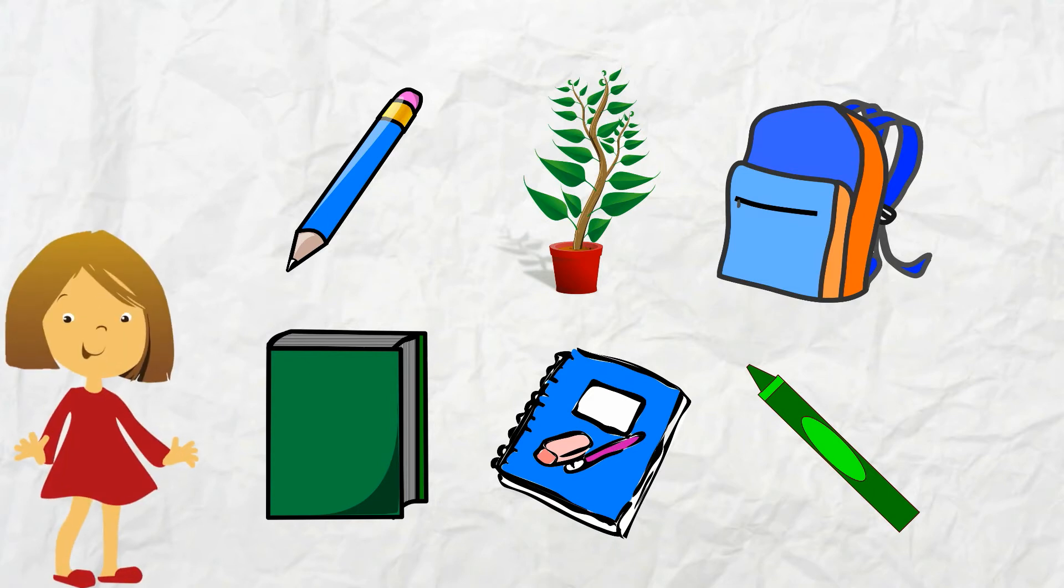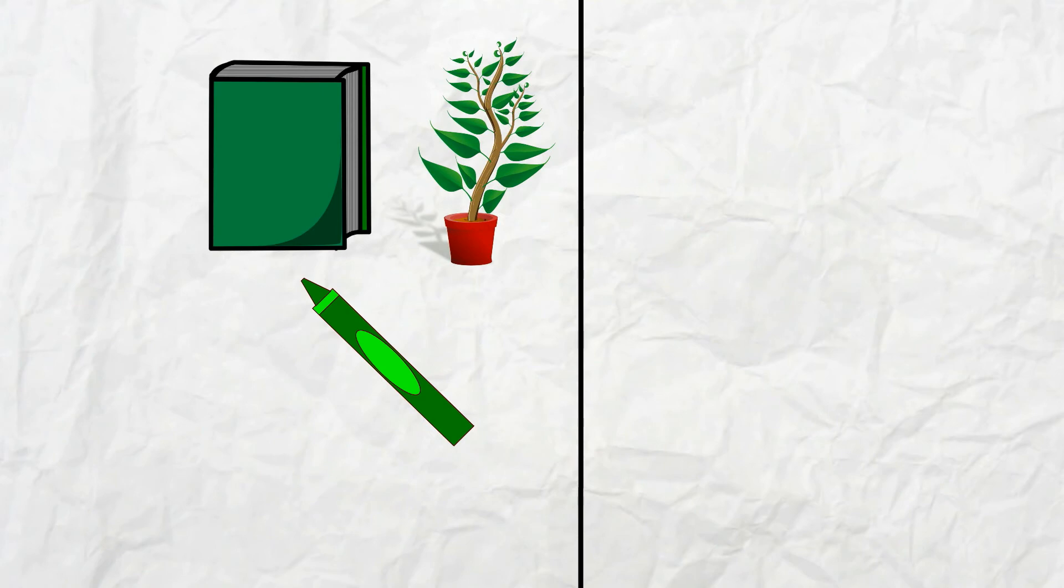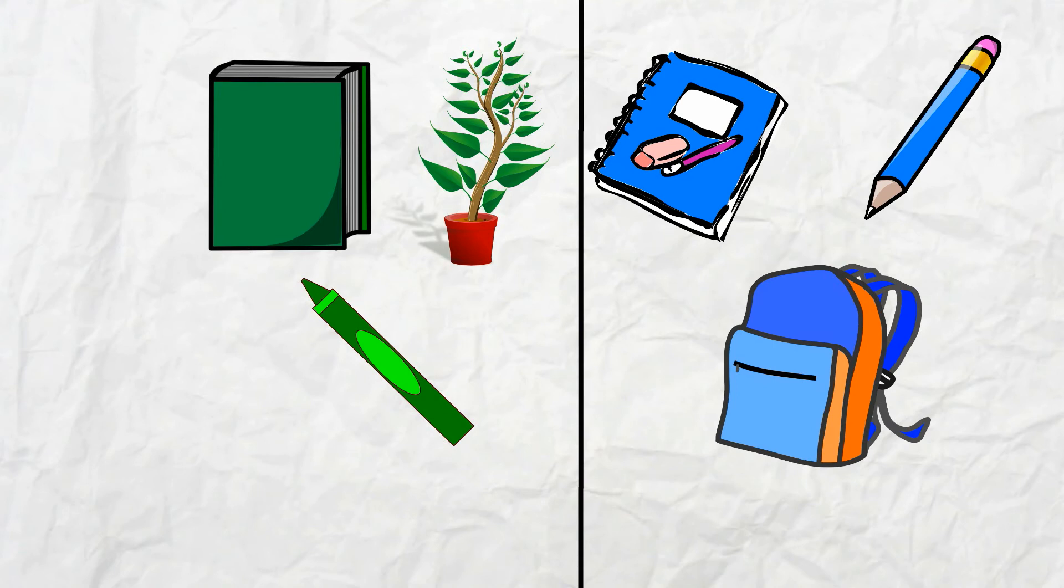That's right! There's a green crayon, a green plant, and a green book. I am going to put these three items in one group because they are all the same color. We can put the other three items in another group because they are all the same color. Blue!